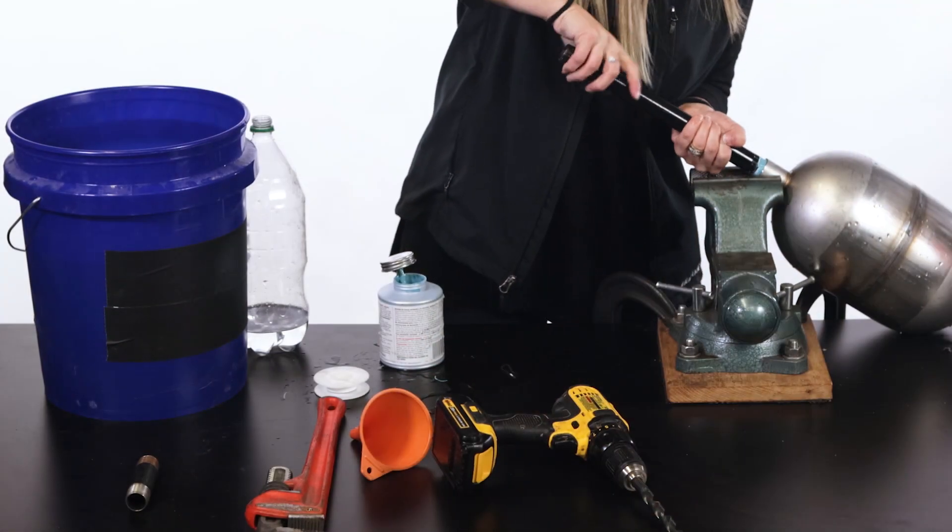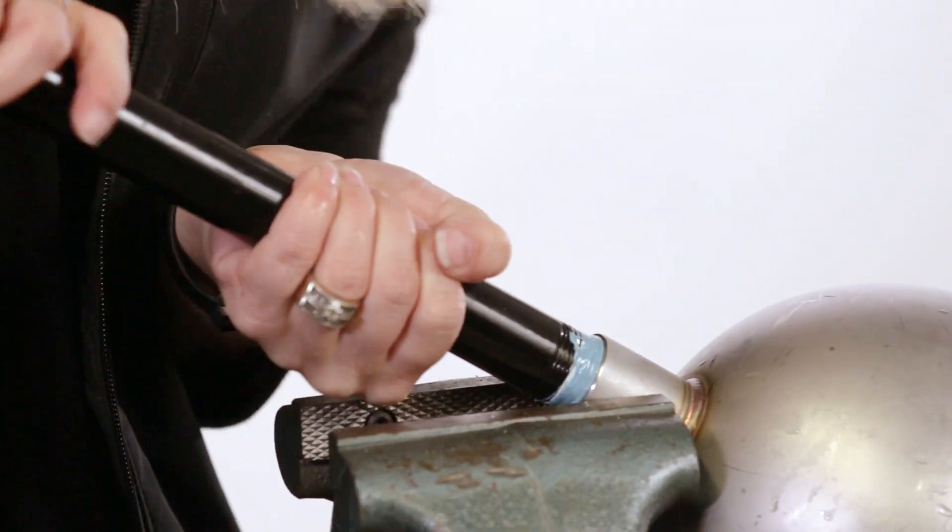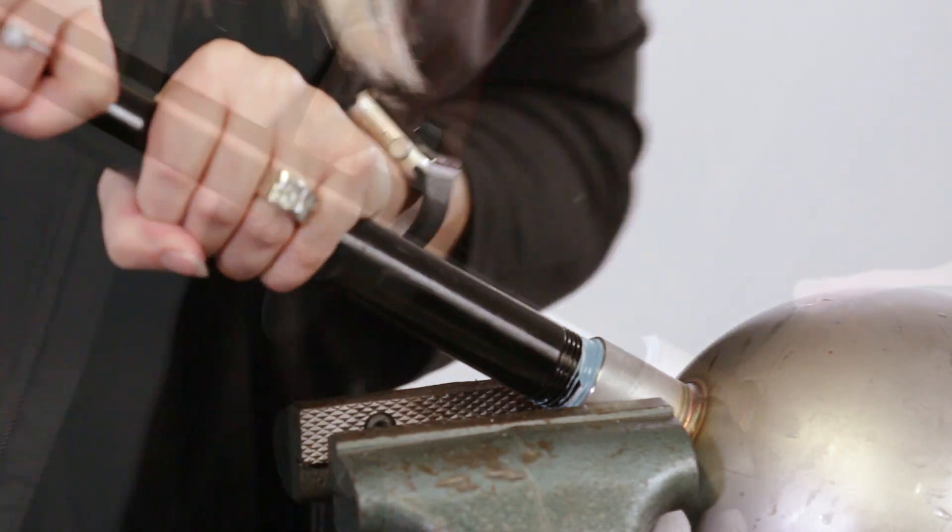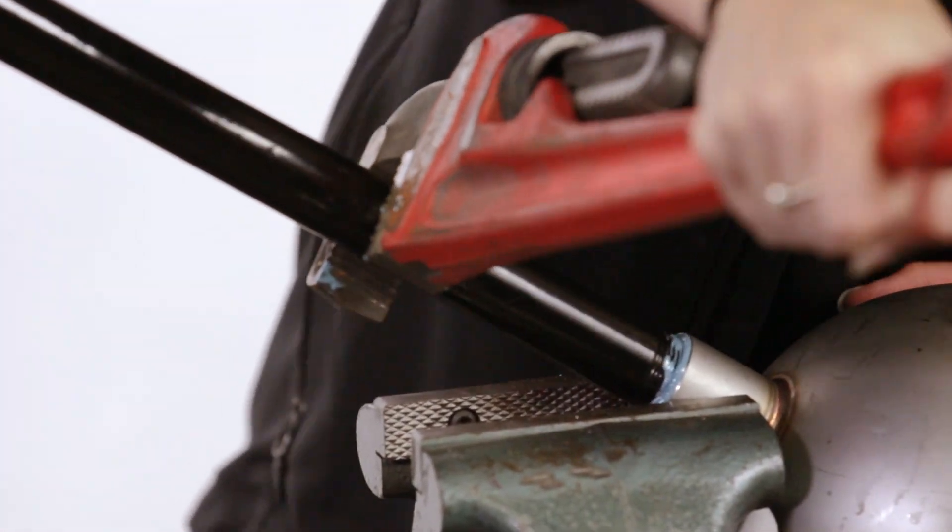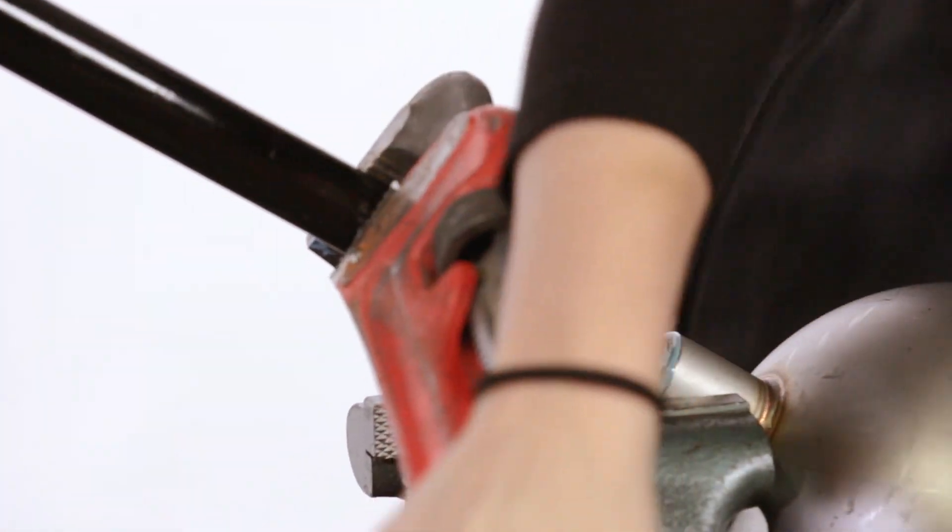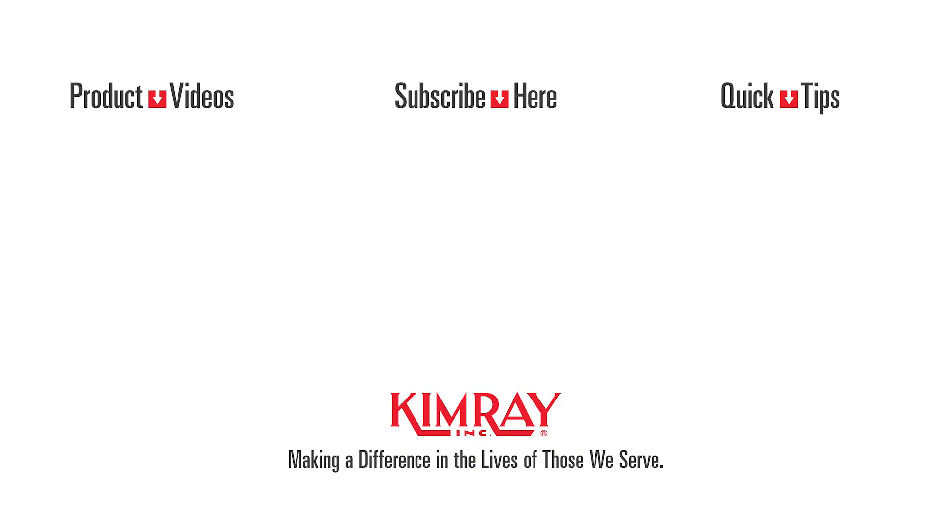Now you can attach the float rod and install it into your vessel. To speak with an expert about your liquid level control setup, contact your local Kimray store or authorized distributor. Thank you.